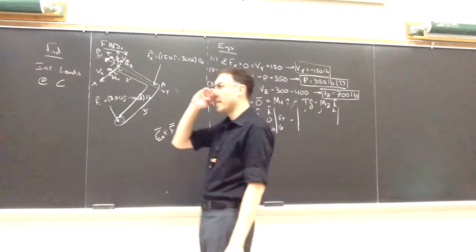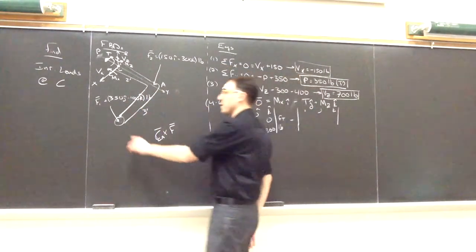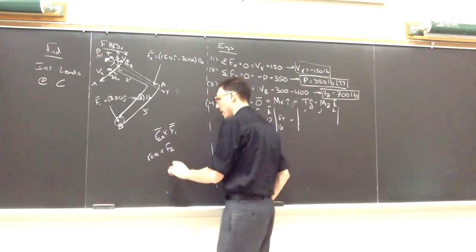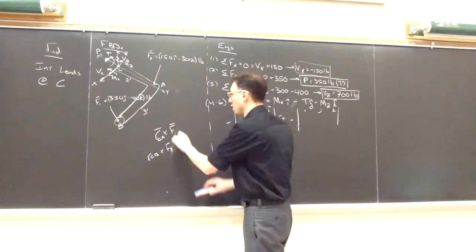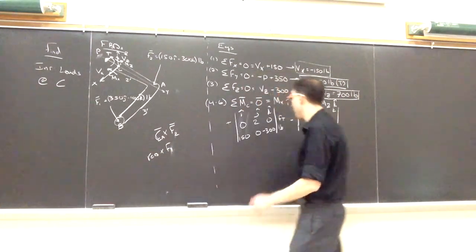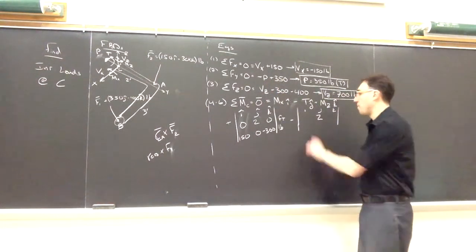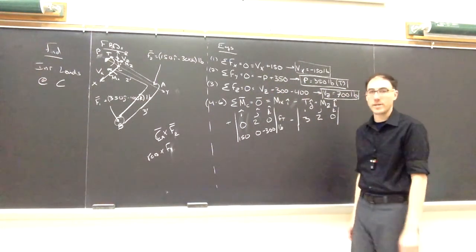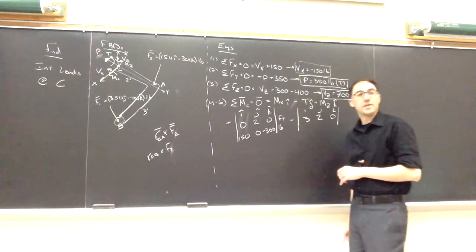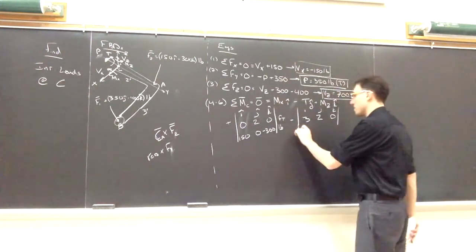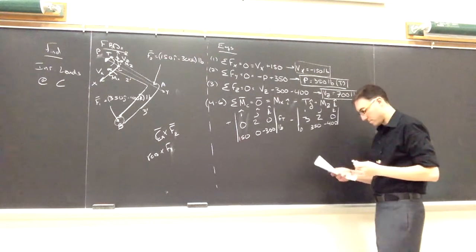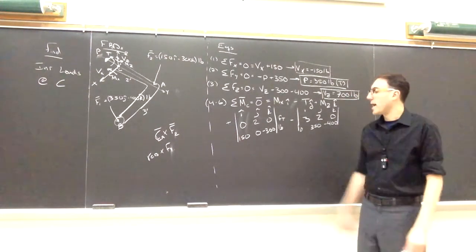Then I want the moments caused by F1. So to go from C to where F1 is being applied, I'll just call it B for the moment. I'll use RCB cross F1. So I go from C to what I'm calling B. I have to go two in the Y. And I have to go positive three in the Y direction and zero in the K. And then the components of F1 I was given were zero, 350, and negative 400.